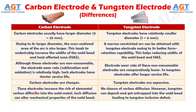And Difference No. 11: Carbon electrodes increase the risk of elemental carbon diffusion into the weld metal. Such diffusion can alter the mechanical properties of the weld bead, whereas with tungsten electrodes there is no chance of carbon diffusion. However, tungsten can deposit and get entrapped into the weld bead, leading to a tungsten inclusion defect.